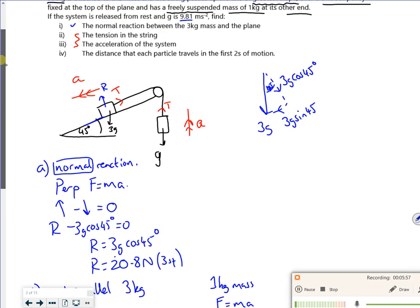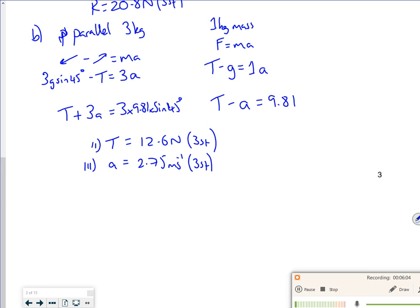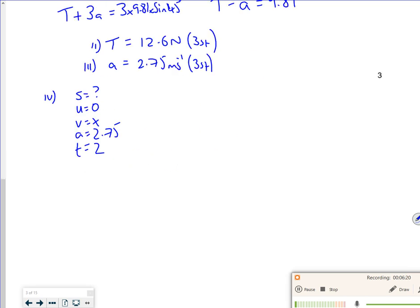Right, so we've got another bit, haven't we? So the distance that each particle travels in the first two seconds. They're both moving together, so they both move the same distance. So s is what I want, u is 0, v not first of all, a is 2.75, t is the first two seconds. So an equation that doesn't have v in it. So s equals ut plus a half at squared. So s is 0 lots of 2 plus a half times 2.75 times 2 squared. So s is, they've got 5.5 meters, but that's to 2 sig figs. Really it should be 3 sig figs. I've not got my calculator on, but is that going to be depth? I think that should be 5.50 meters if it's 3 sig figs.